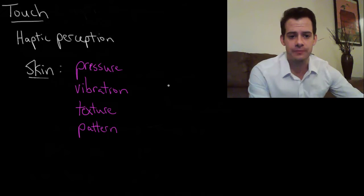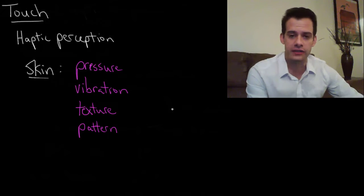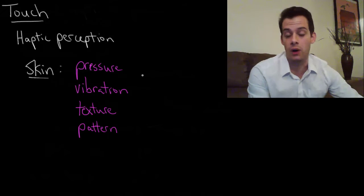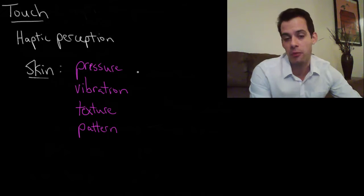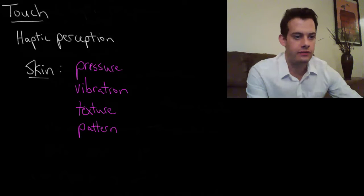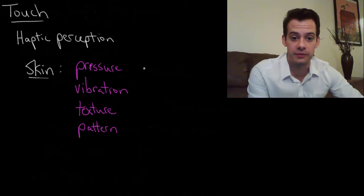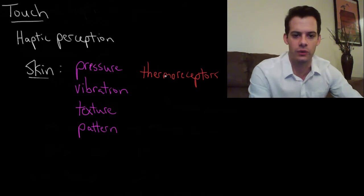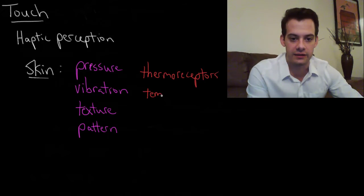But we also have other receptors that detect other things. Another thing that you can sense is temperature. And so that's going to use specialized receptors that are called thermoreceptors. So thermoreceptors are able to detect temperature.